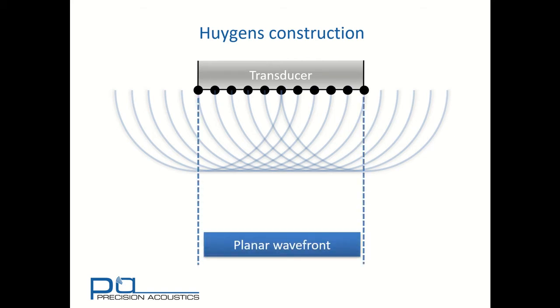If we consider that region bounded by the transducer's radiating surface we can see there's an almost planar wavefront. In fact if we decompose the surface into an infinitesimal number of point sources we would see a completely planar wavefront. Outside of that region we have circularly and spherically radiating components which are indicative of diffraction.